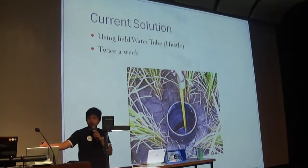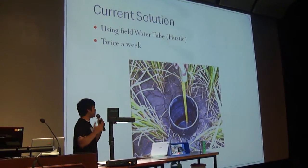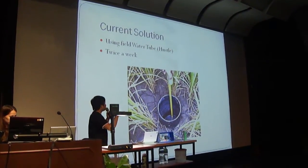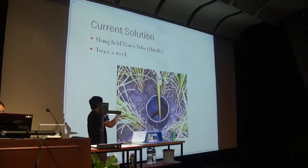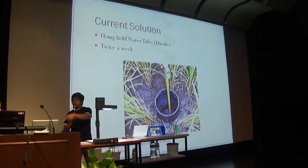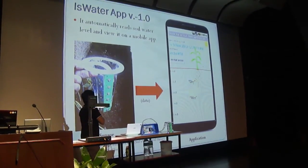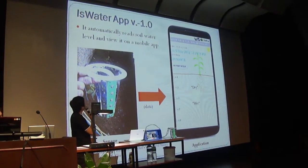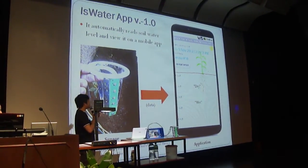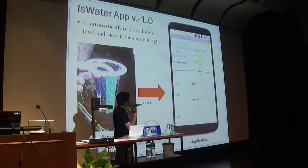So we came up with a solution. The current solution that the farmers use right now is the filled water tube, wherein they bury the tube and then manually measure the water level of the soil. Our solution automatically reads the soil level — not the moisture level, but the level of the water under the soil.